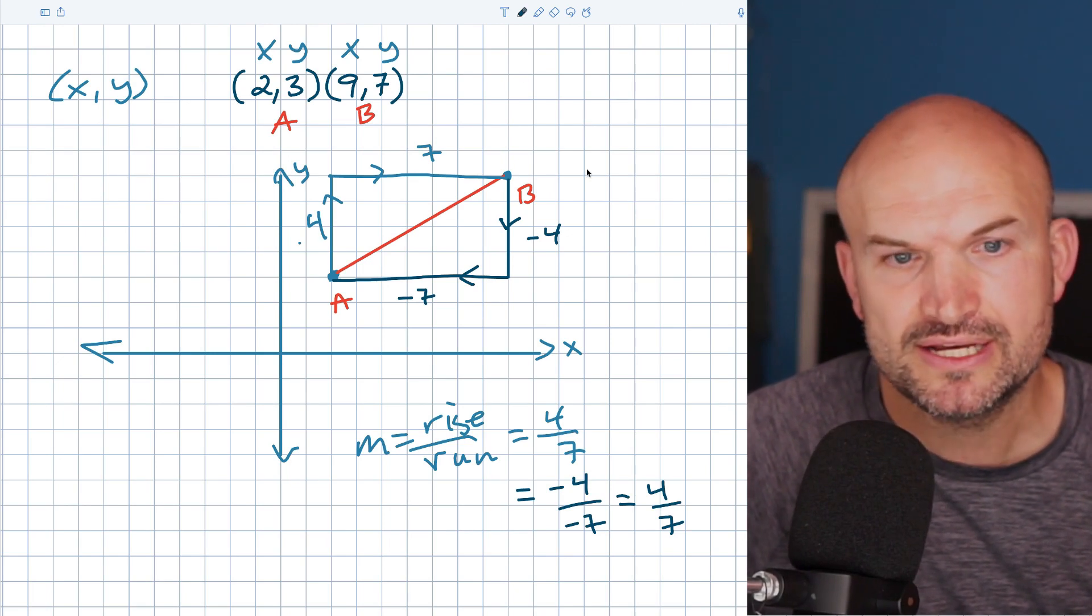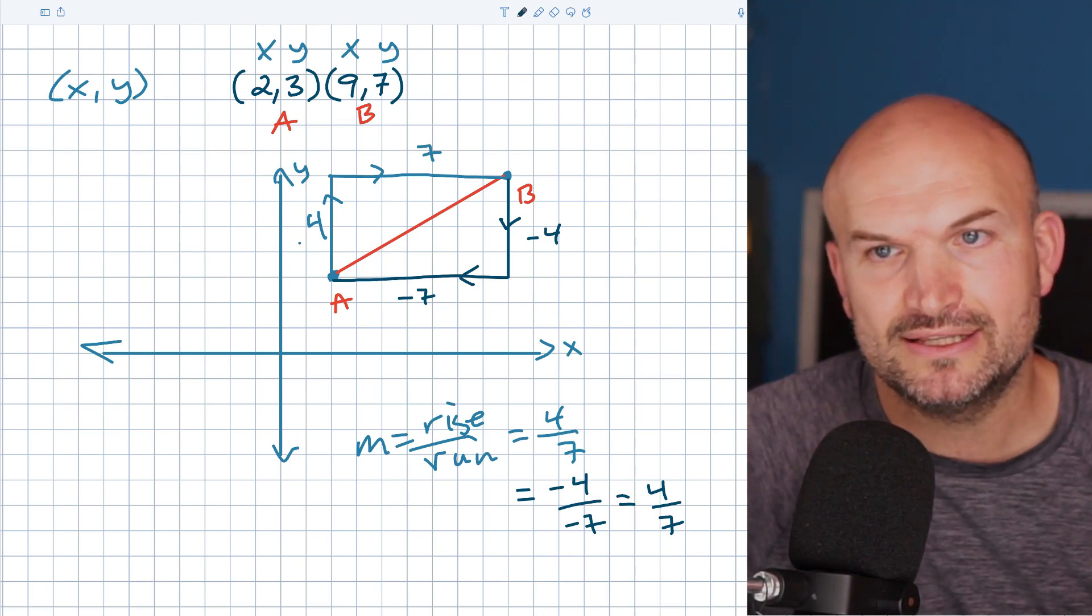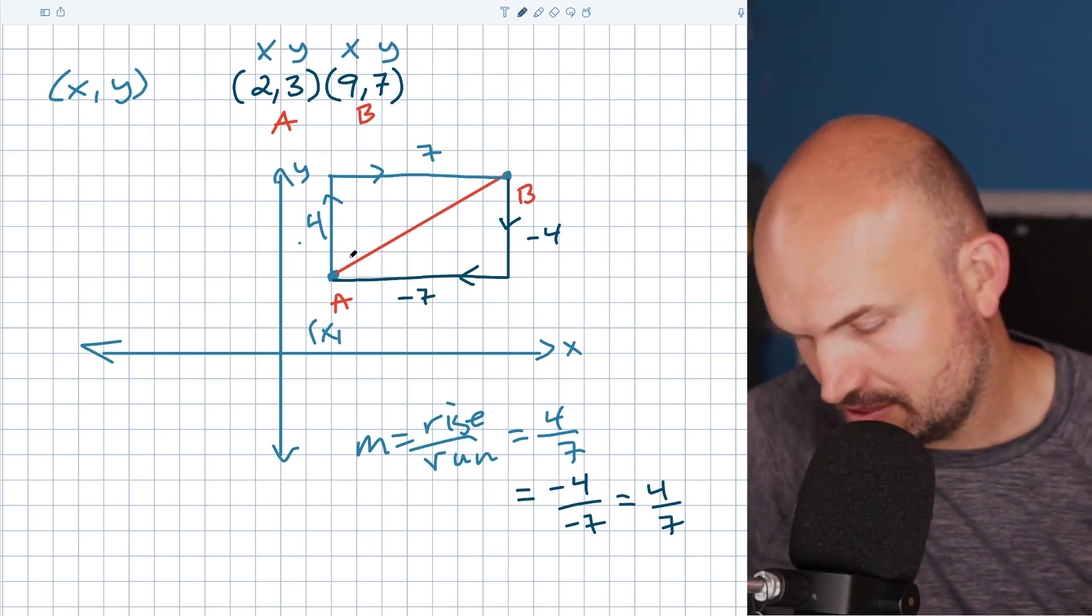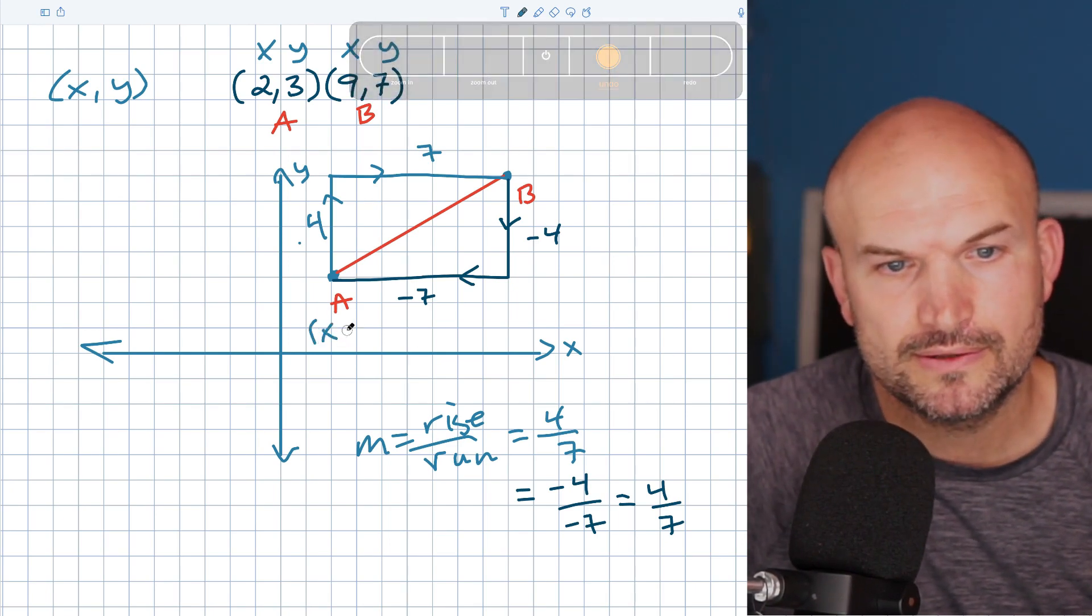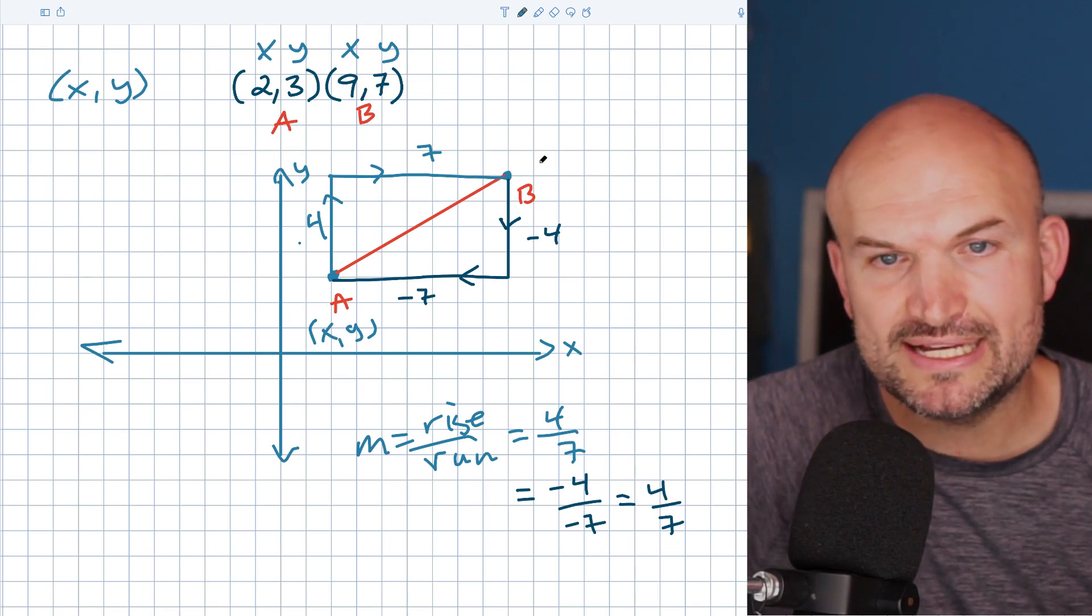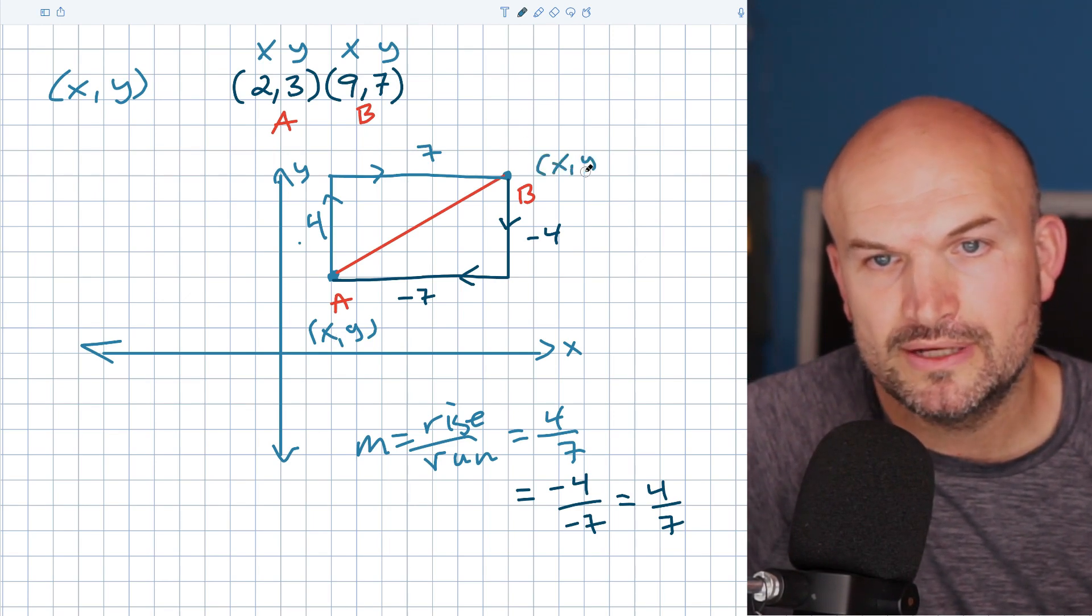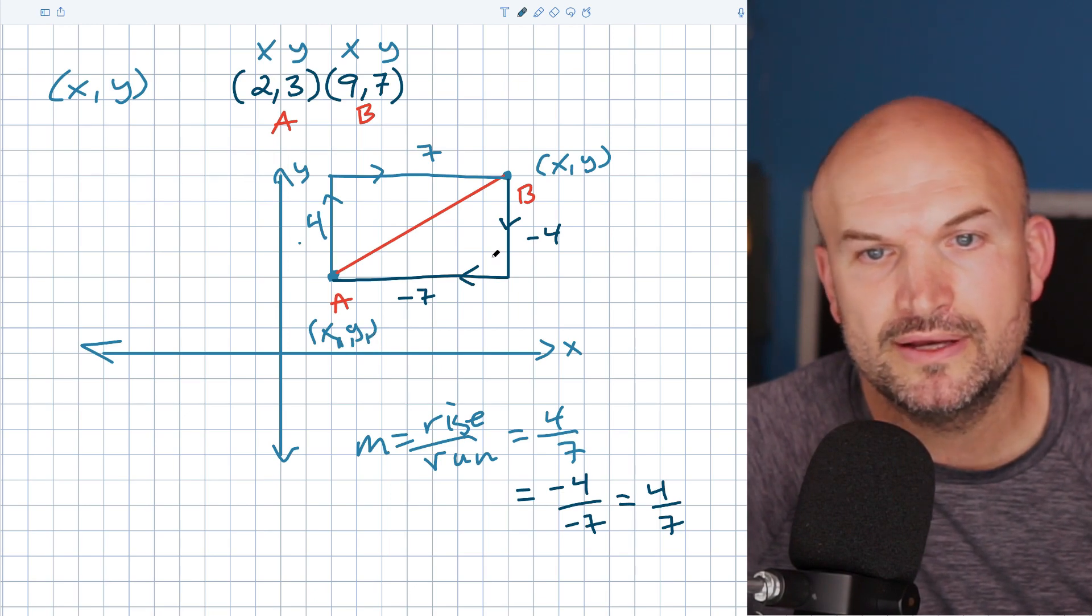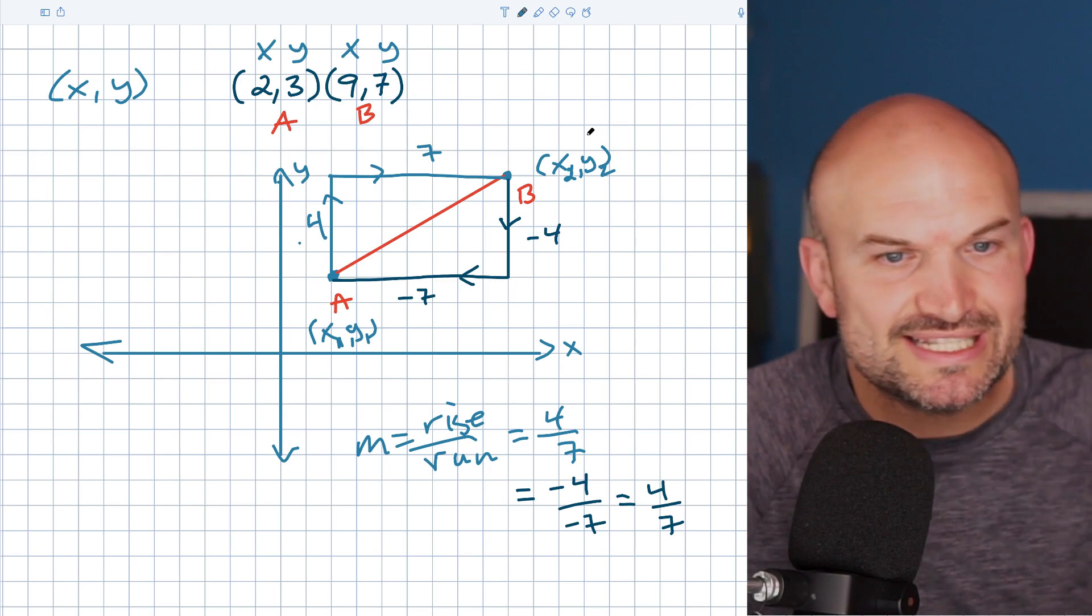Because what I want you to see in this example is I actually have this point A labeled here. I have this labeled as an X, Y, or let's do this as an X, Y. And this point B is also labeled as an X, Y. Now to differentiate them, I could say this is going to be an X1, Y1, and this one is going to be an X2, Y2. So we can differentiate them.